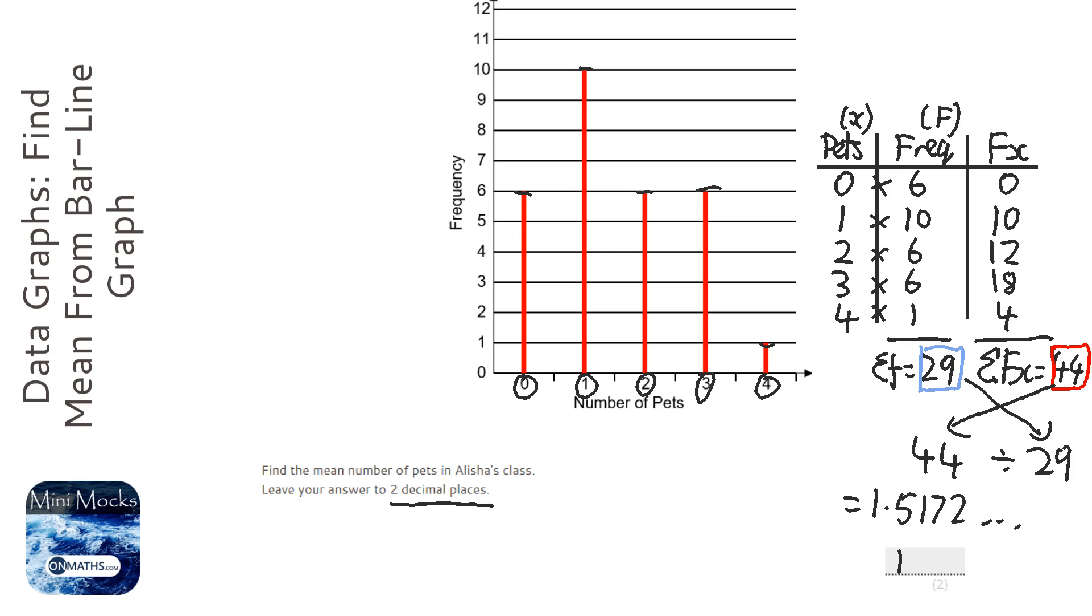So, to two decimal places, that is 1.52, because that seven moves that one up.